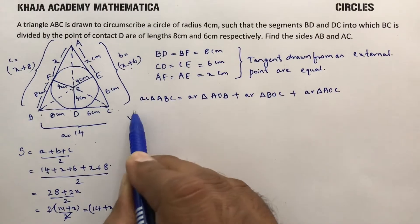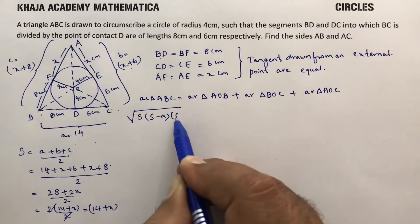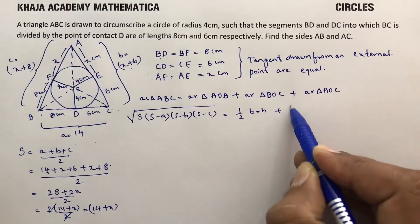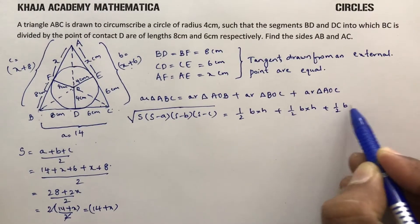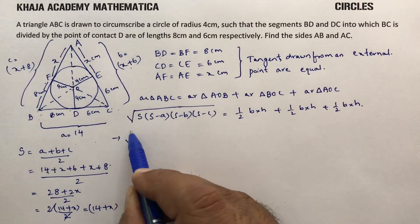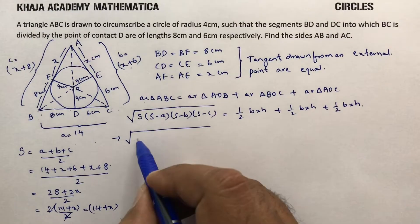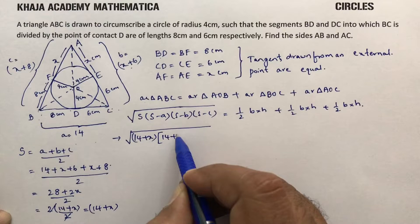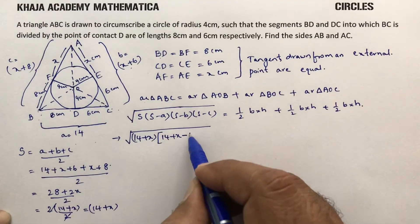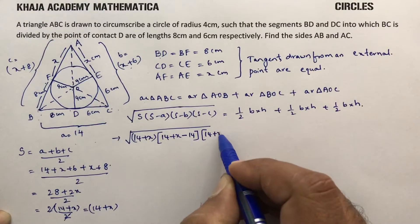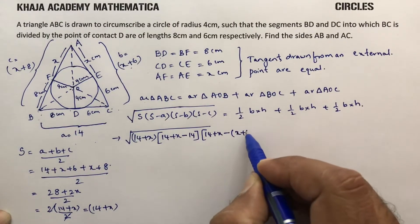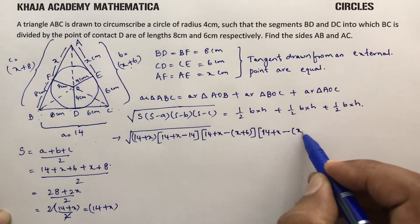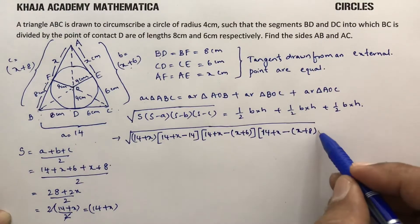Heron's formula for area of triangle is under root of S into (S minus A) into (S minus B) into (S minus C). Here S is 14 plus X, S minus A is 14 plus X minus 14, S minus B is 14 plus X minus (X plus 6), and S minus C is 14 plus X minus (X plus 8). This gives the area of triangle ABC.